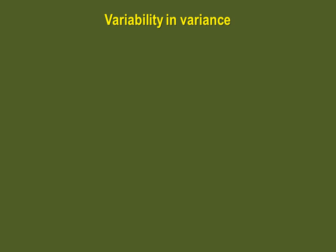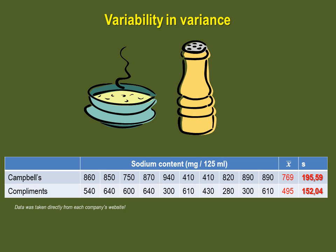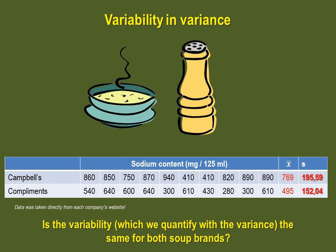If you regularly go to the grocery store, you might have noticed that you can get different brands of the same product. For example, you can get different types of soups from Campbell's, from Knorr, or from the store brand name. We could ask ourselves whether the variability in salt content is the same from brand A to brand B. Here are some salt contents for soups from two distinct brands, Campbell's and Compliments, which is IGA's store brand. The table shows us that the mean salt content in Campbell's soup is higher than Compliments, which is interesting. But the table also shows that the values vary for both brands, and our question is: is the variance the same for both brands?